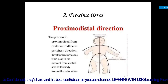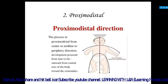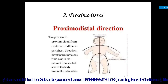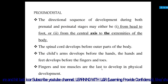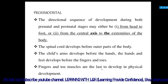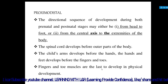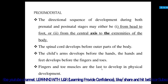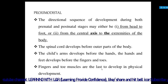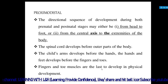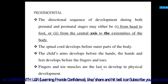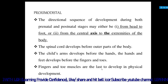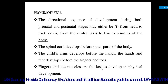Development proceeds from near to far — outward from the central axis of the body towards the extremities: from chest to arm, then hand, then fingers. The same applies to the legs. This directional sequence occurs during both prenatal and postnatal stages. The spinal cord develops before outer parts of the body, the child's arms develop before the hands, and the hands and feet develop before the fingers and toes, which are the last to develop in physical development.